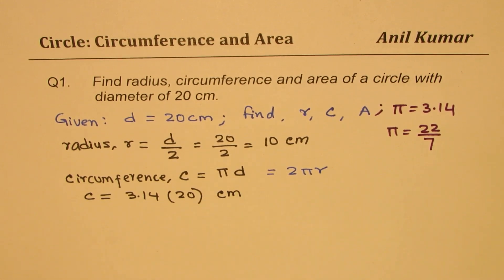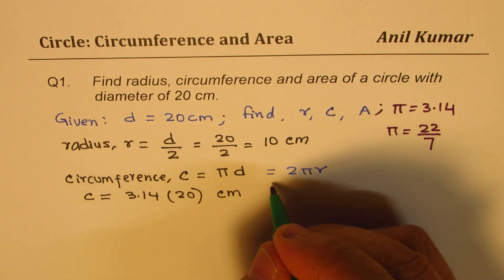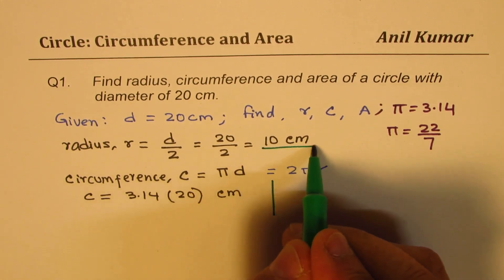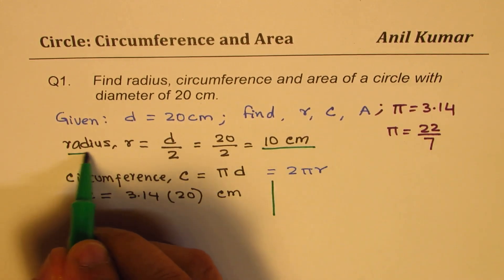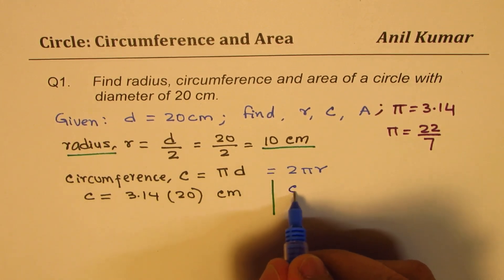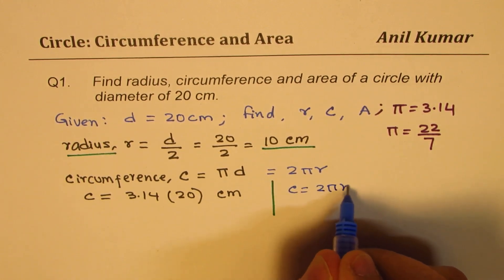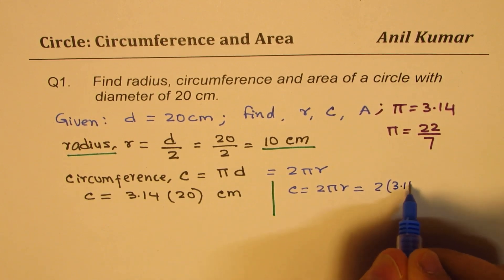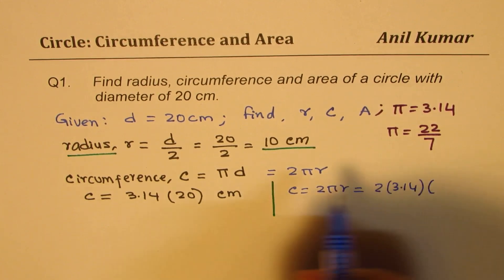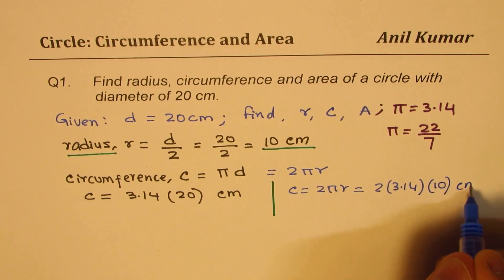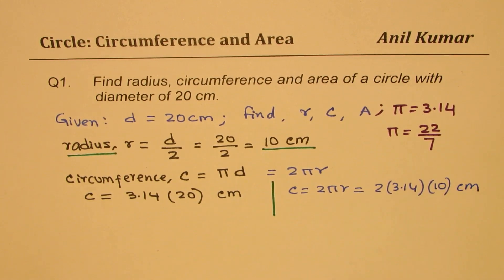If I use the other formula, which is 2πr, we know radius is 10 centimeters. So, using c equals 2πr, it is 2 times 3.14 times radius of 10. Units will be centimeters — one and the same thing.